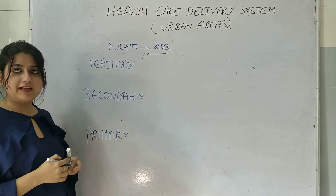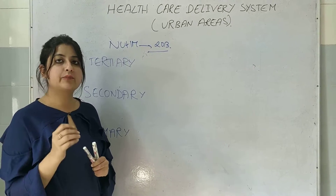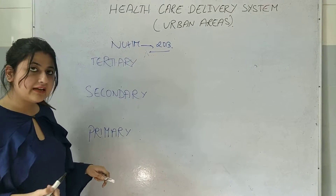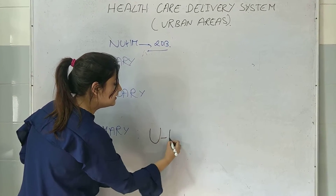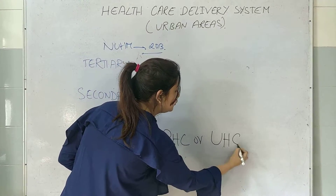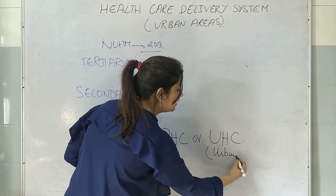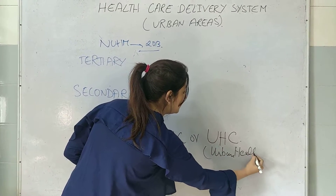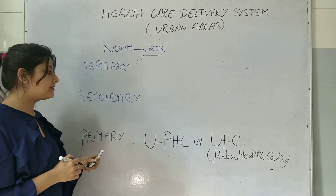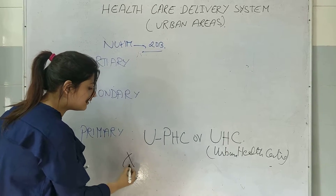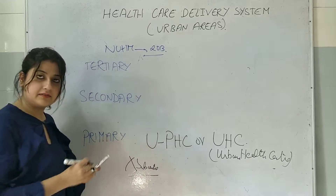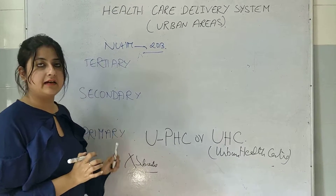The primary level of healthcare, as I told you, is the first level of contact between the population and the health system. So in urban areas, the primary level of healthcare is being provided by Urban Health Centre, or UHC. Unlike rural areas, we do not have a sub-centre in urban areas — so there is no sub-centre in urban areas.